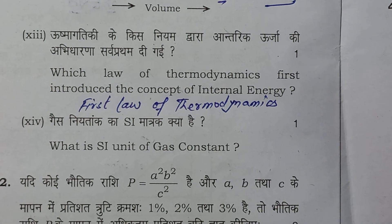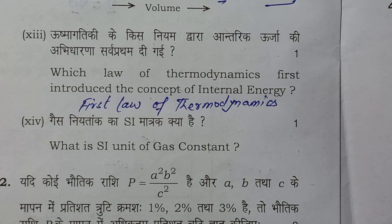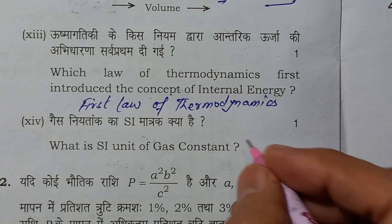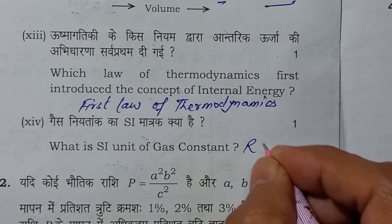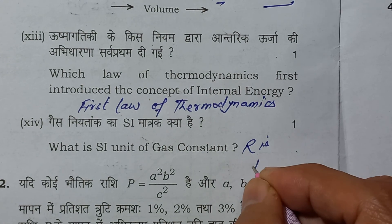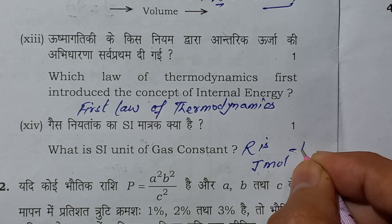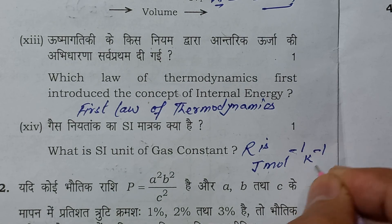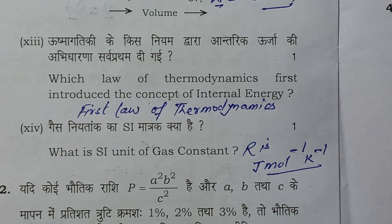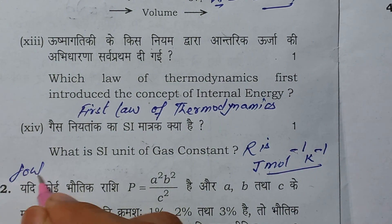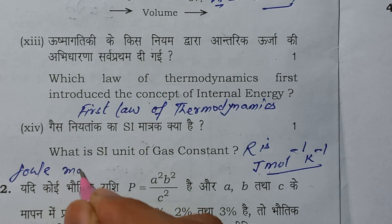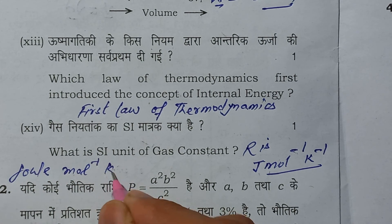Next question. What is the SI unit of gas constant? SI unit of gas constant R is joule per mole per Kelvin.